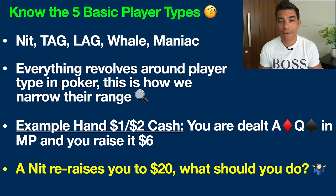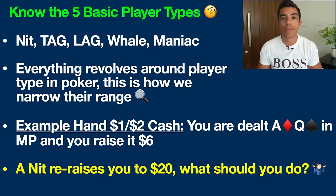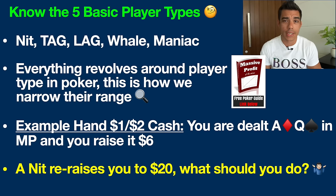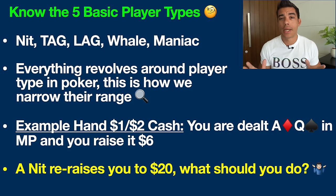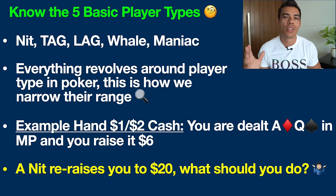That is really where we need to start off in terms of understanding someone's range — you need to know the five basic poker player types. These are Nit, Tag, Lag, Whale, and Maniac. If you don't know these player types, I recommend downloading my free poker cheat sheet, the top link in the description below. Everything in poker revolves around the player type. Every decision you make at the poker table depends on what type of player you're up against.